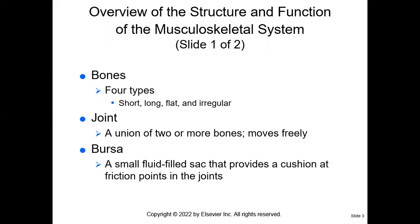The body is made up of 206 bones. We have four types: short, long, flat, or irregular. It's important to understand how the skeleton is set up, and that joints are where two bones meet and usually move freely. In the case of the skull, the joints do not move freely.